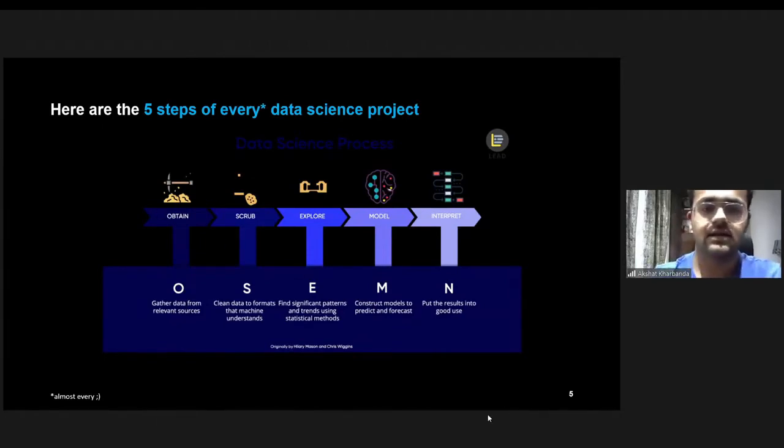Just a quick overview of all of these. The very first step is Obtain. It's data science, so obviously you need data. Obtaining is just this idea of getting data.